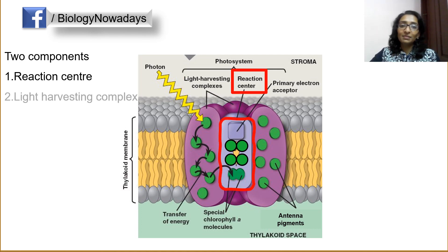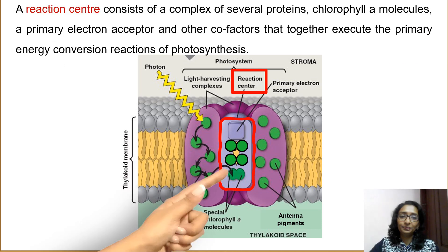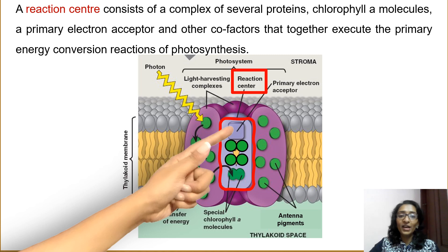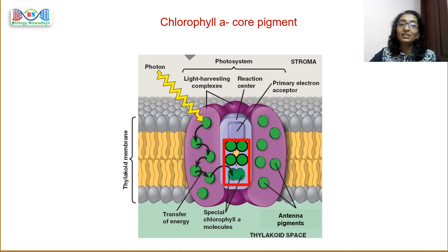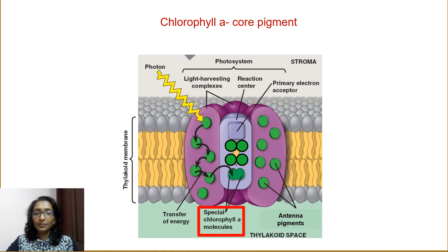Let's discuss about the reaction center in detail. A reaction center consists of a complex of several proteins, chlorophyll A molecules, a primary electron acceptor, and other cofactors that together execute the primary energy conversion reactions of photosynthesis. Chlorophyll A is known as the core pigment. There are six chlorophyll A molecules in the reaction center and they are called reaction center chlorophylls. Out of these, two of them form the special pair chlorophylls. They are called special pair because only this special pair of chlorophyll A molecules can take part in the primary photochemical reaction in photosynthesis.